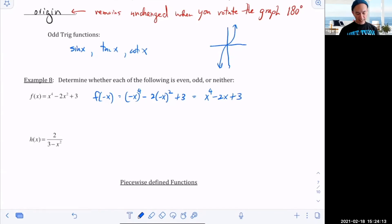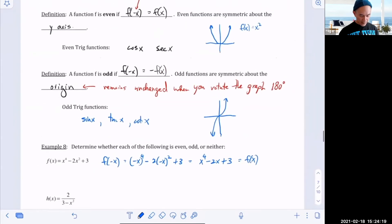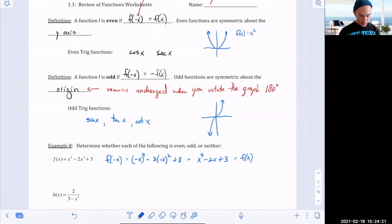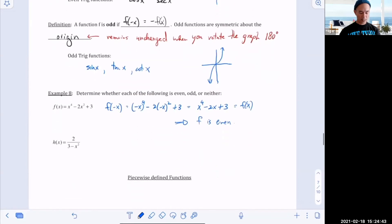And if you look, this is exactly the same as my original function f of x. So take a look at our definition. We're saying when you start off with f of negative x, which is right here, and if you can transform it into f of x, which we did over here, then that means that the function is going to be even. So this means that f is even.